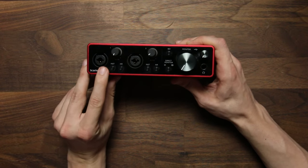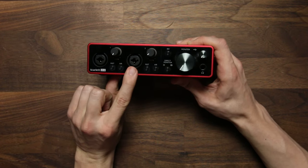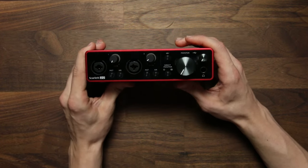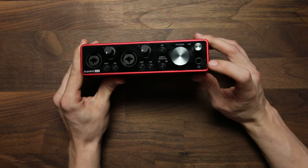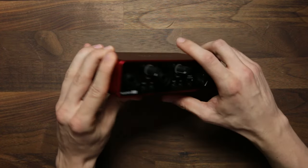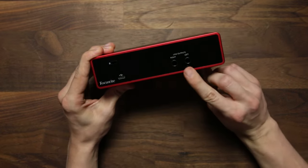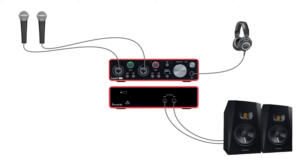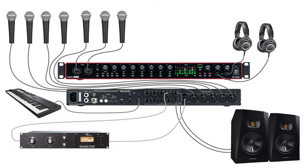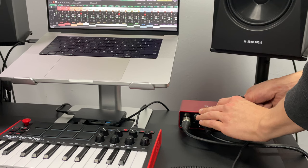Most interfaces in this price range will have one or two inputs for connecting microphones and instruments, as well as a headphone output and outputs for powered studio monitors. If you just plan on recording one or two microphones at a time, an interface like the Scarlett 2i2 is going to be a perfect fit for you. But if you want to record a full band at the same time, you'll want to look into a larger interface like the Scarlett 18i20.